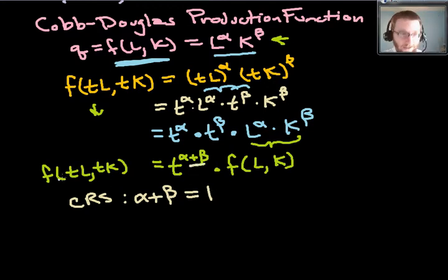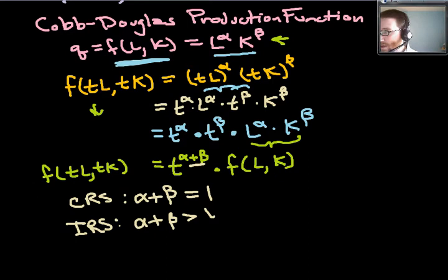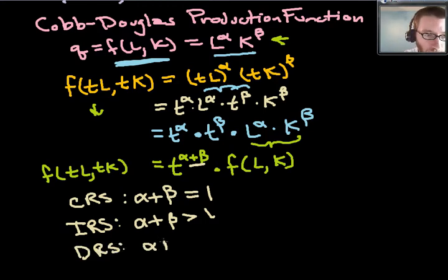Now that gives me a good cut point because I'm going to have increasing returns to scale whenever this multiplier is greater than t which will be the case when alpha plus beta is greater than one. And then we might have the case that we have decreasing returns to scale when alpha plus beta is less than one.